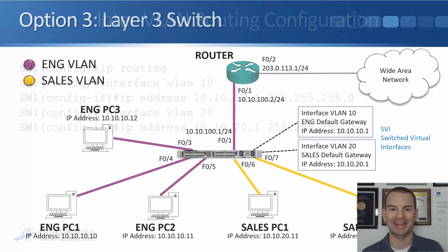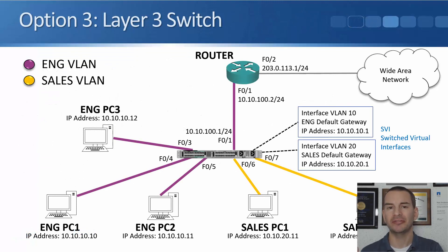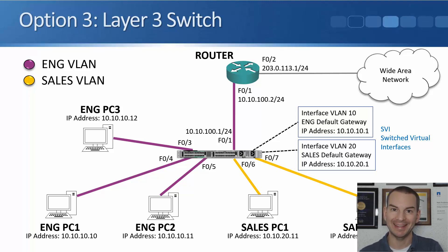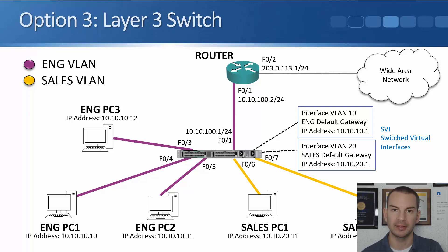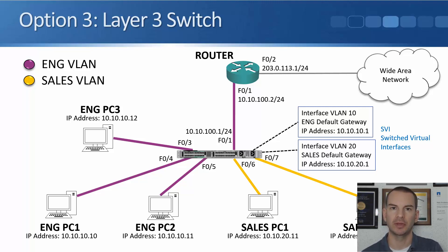Going back to the diagram, when we did the first two options — router with separate interfaces or router on a stick — the router was directly connected to the 10.10.10 and 10.10.20 networks, so no explicit route was needed. In this example, it's the switch that's connected to those networks and the router is not, so we do need to configure that route.